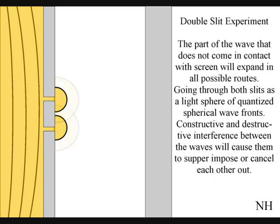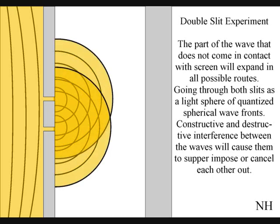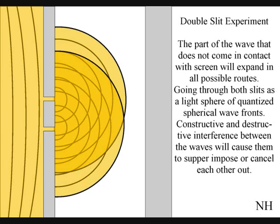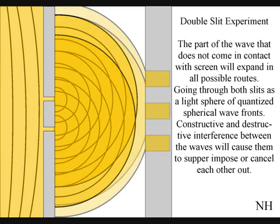The part of the wave that does not come in contact with the screen will expand in all possible routes going through both slits as two light spheres of quantized wave fronts. Constructive and destructive interference between the waves will cause them to superimpose or cancel each other out. When this wave particle function comes in contact with the screen it will collapse creating moments of time and quantum particles in the shape of an interference pattern.